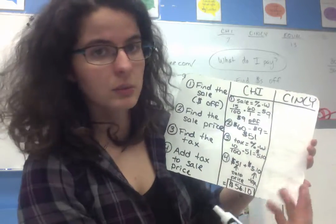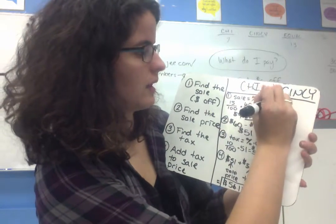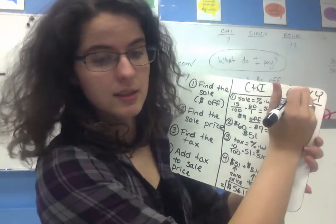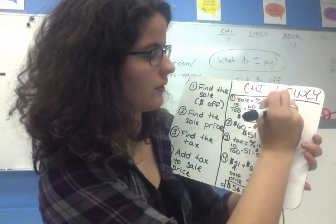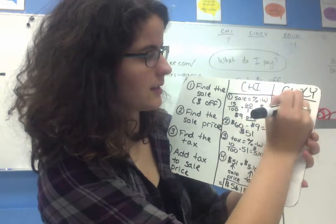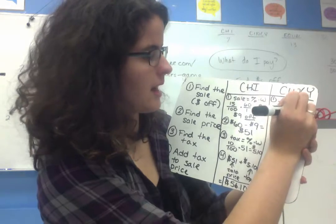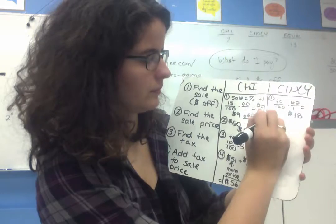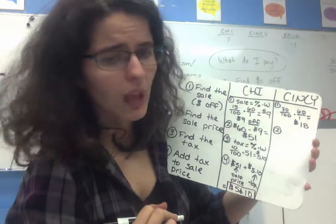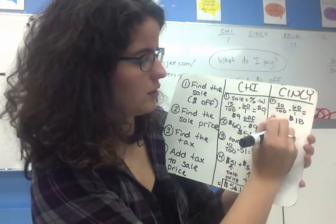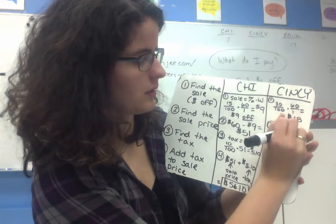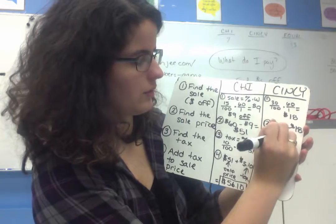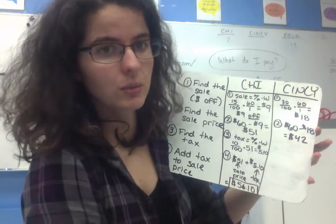Cincinnati, similar situation. If we're talking that the sale is going to be the percent of the whole, in Cincinnati's case the sale was 30% off of that $60, and that ended up being $18. Then to find the sales price, I would do my $60, take off the $18 that is my sale, and I'm going to end up with $42 as the new price that I need to pay.